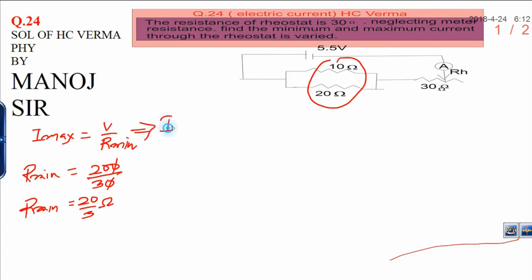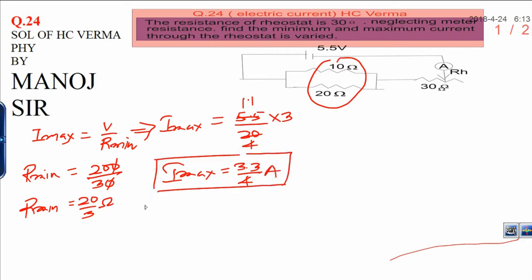Now you need to calculate the value of maximum current, I max. I max will be V is 5.5, this is given in the question, divided by 20 over 3. Now 5 by 3, you can get 1.1, that is 4. Finally, I maximum becomes 3.3 divided by 4 ampere. This is the maximum current in this circuit.